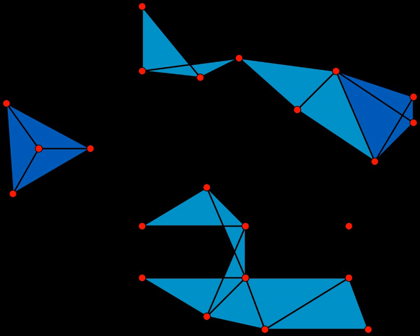Clique width is a notion of the complexity of a graph in terms of the minimum number of distinct vertex labels needed to build up the graph from disjoint unions, relabeling operations, and operations that connect all pairs of vertices with given labels. The graphs with clique width 1 are exactly the disjoint unions of cliques.